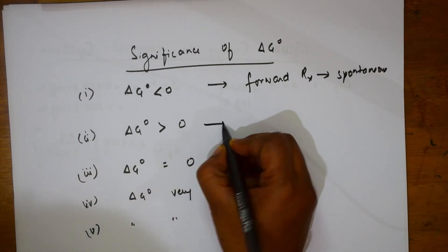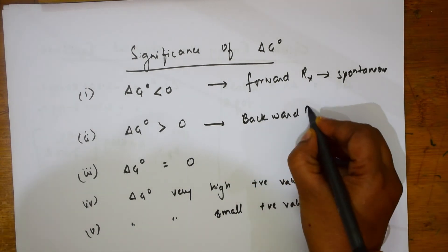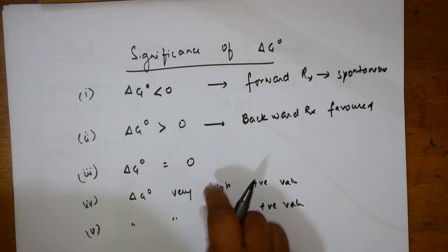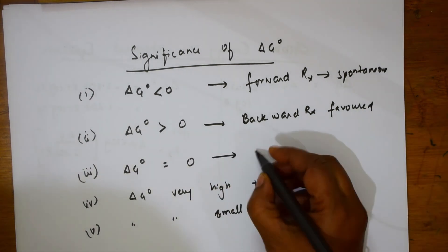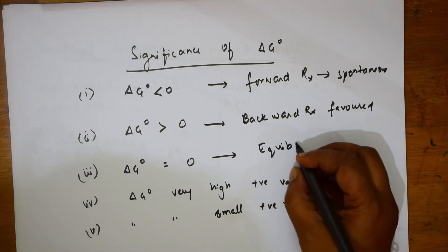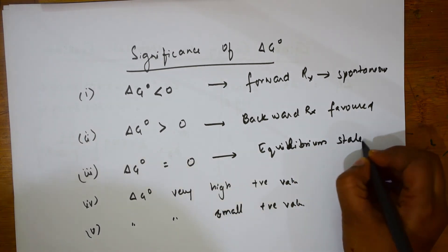If it is greater than 0, backward reaction is favored. If it is equal to 0 after solving, that means it represents an equilibrium state.